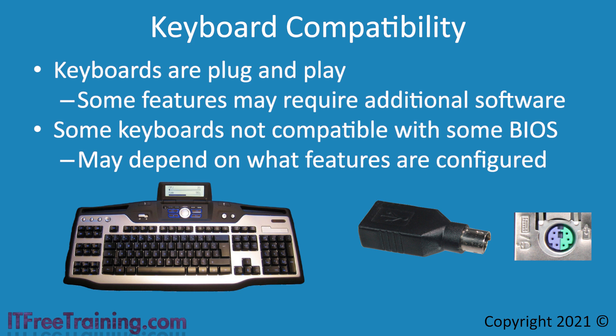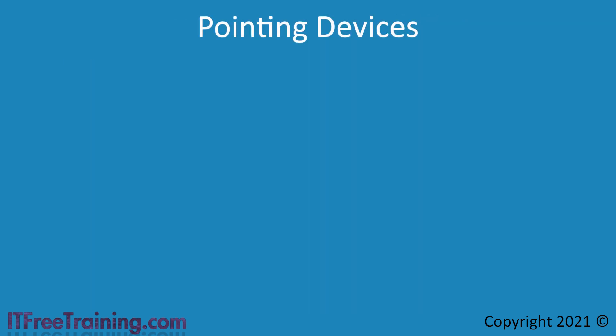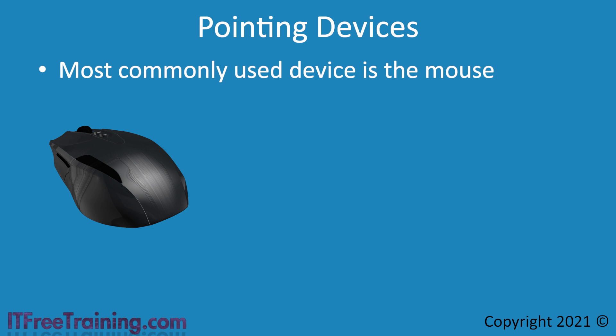That covers it for keyboards. The next device I will look at is pointing devices. A pointing device allows the user to provide input to the computer, which is generally used to move a mouse cursor around the screen. The most commonly used pointing device is the mouse. Modern mice have changed a lot since they were developed in the late 70s. To give you an understanding of how they have changed, consider a trackball. A trackball captures movement by the user moving the ball with their hand. The old computer mice worked the same way as the trackball, except they were essentially upside down — the ball was on the bottom of the mouse and when the user moved it, it captured the motion.